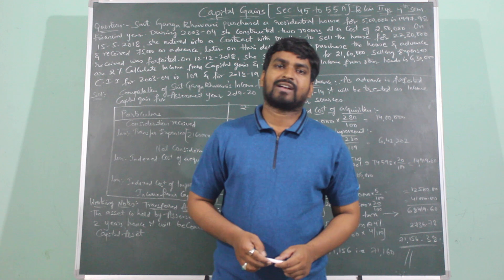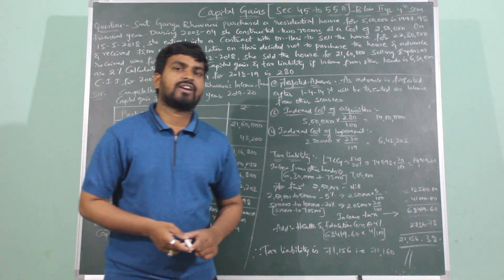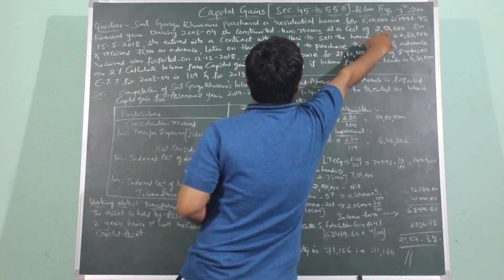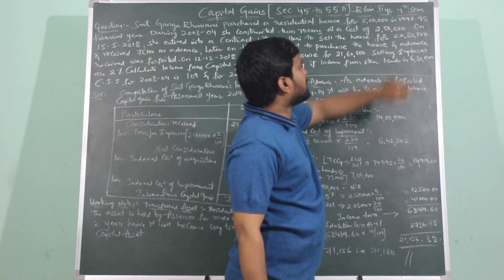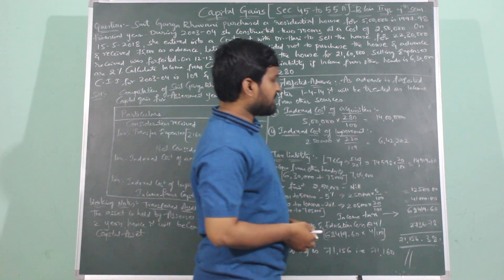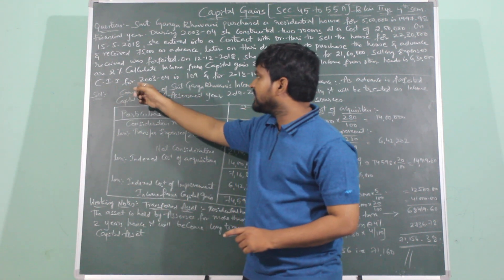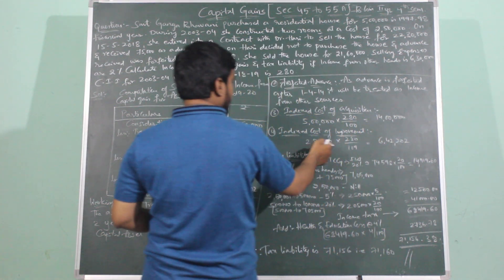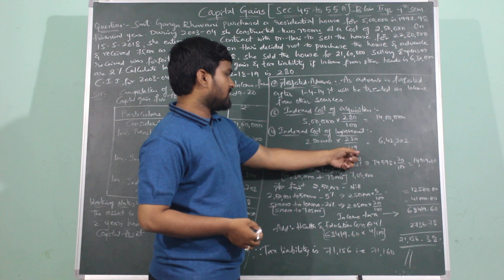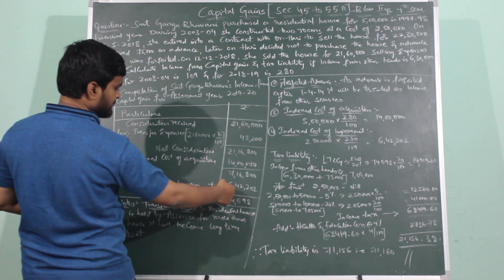Cost of improvement is the amount of capital expenditure incurred on the asset after its acquisition. During the year 2003-2004, she constructed two rooms at a cost of Rs. 2,50,000, so cost of improvement is Rs. 2,50,000. Indexed cost of improvement = 2,50,000 × 280 ÷ 109 = Rs. 6,42,202. Here 280 is the previous year CII index and 109 is the index for 2003-2004, the year the improvement was made.